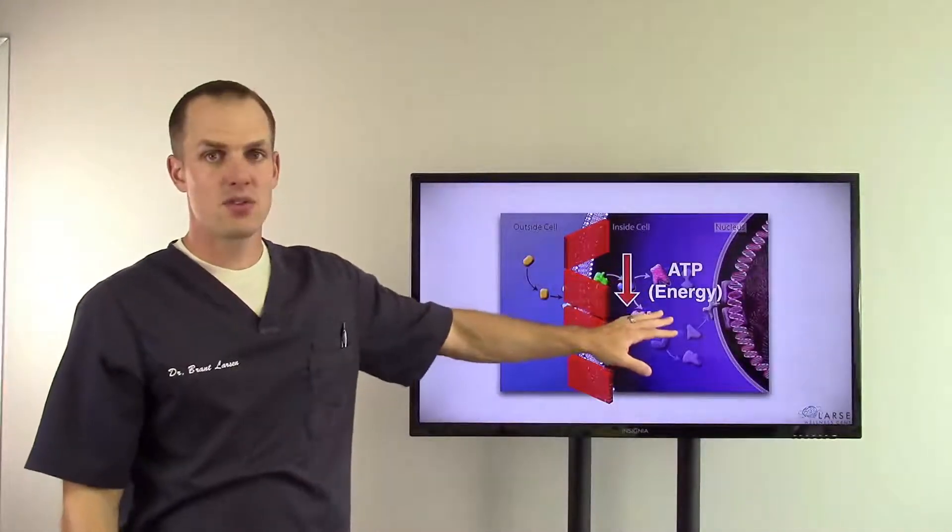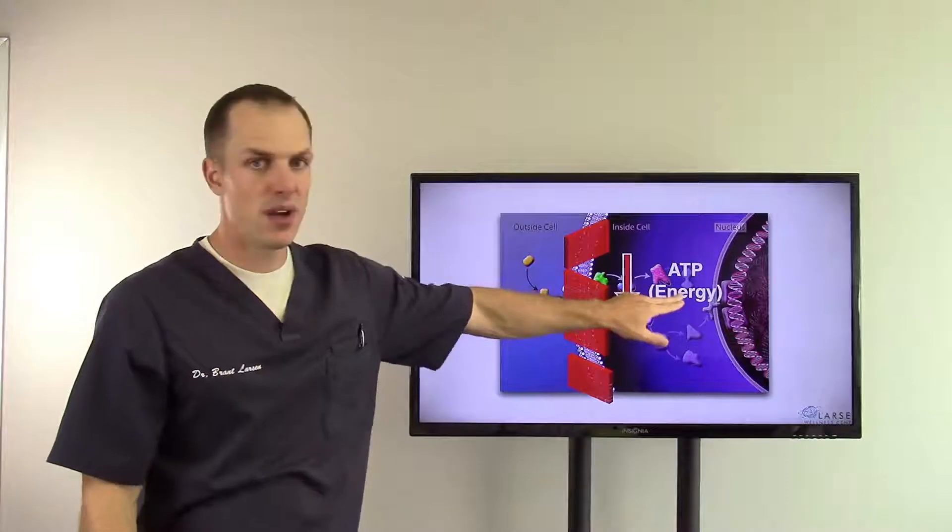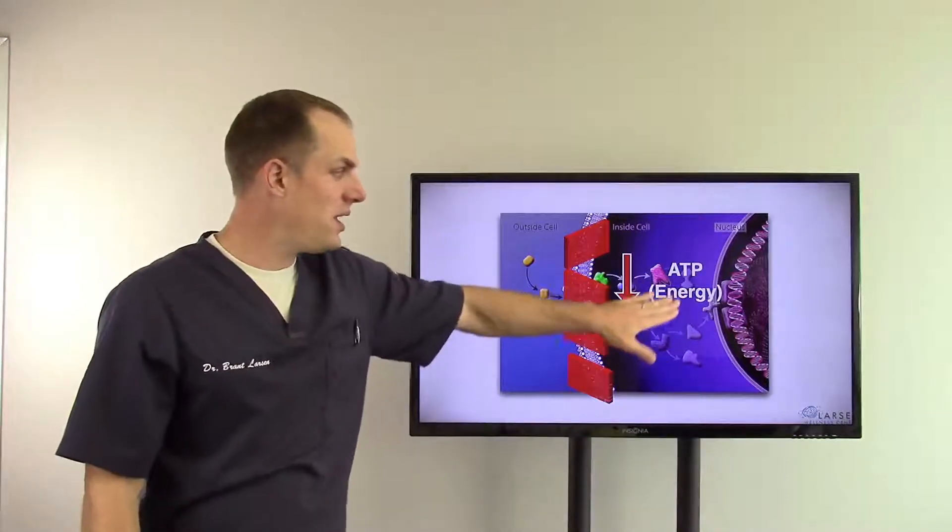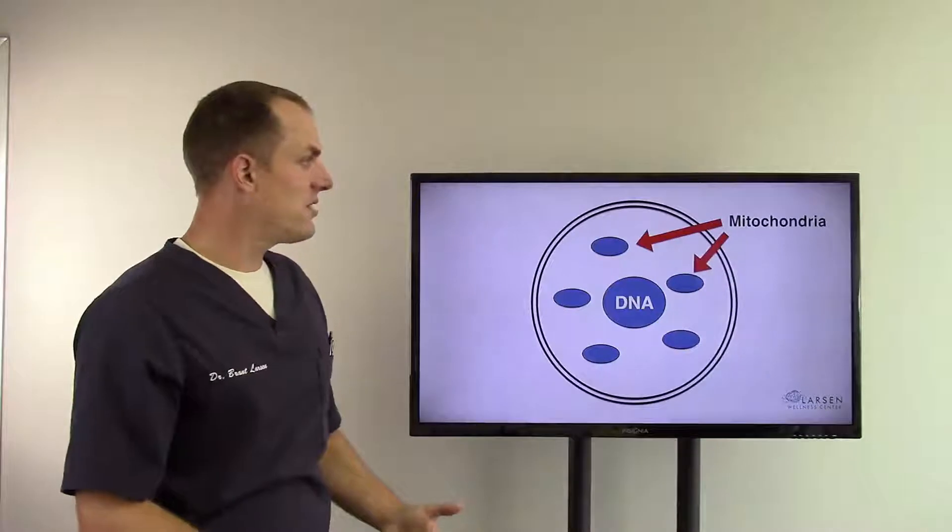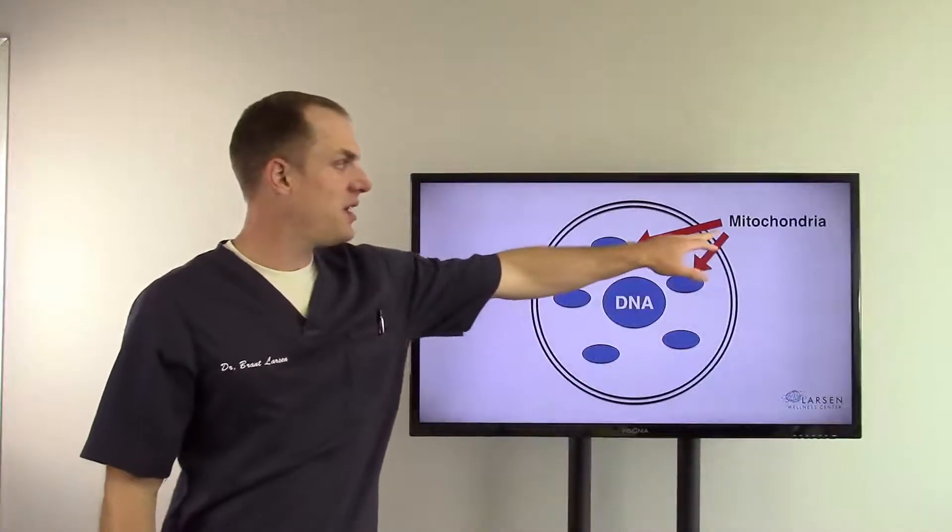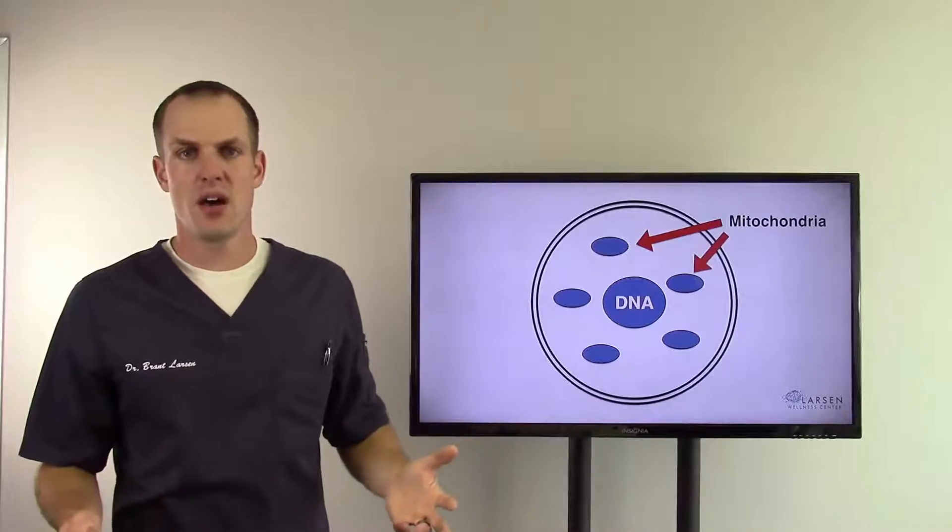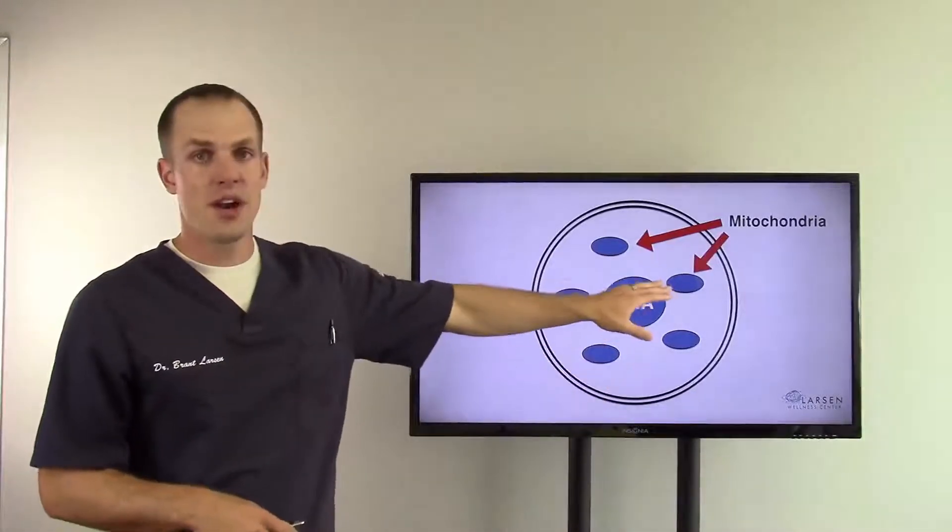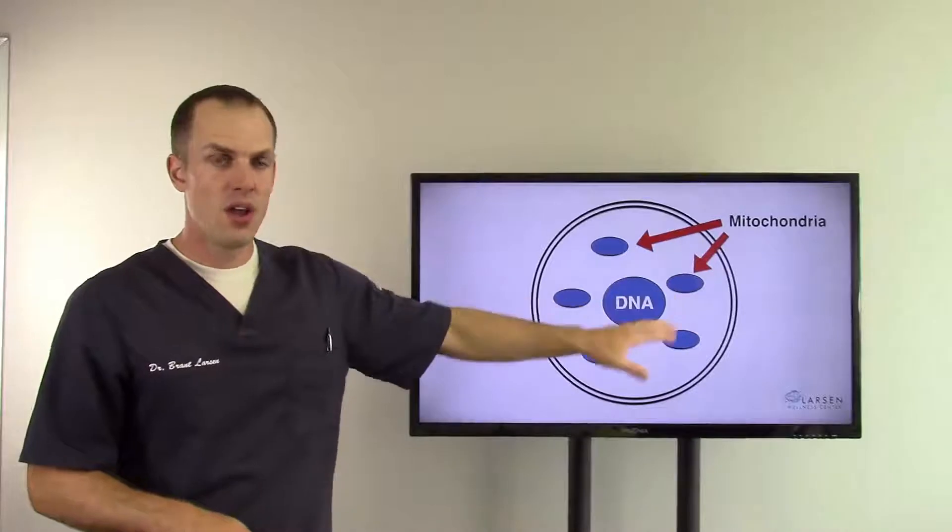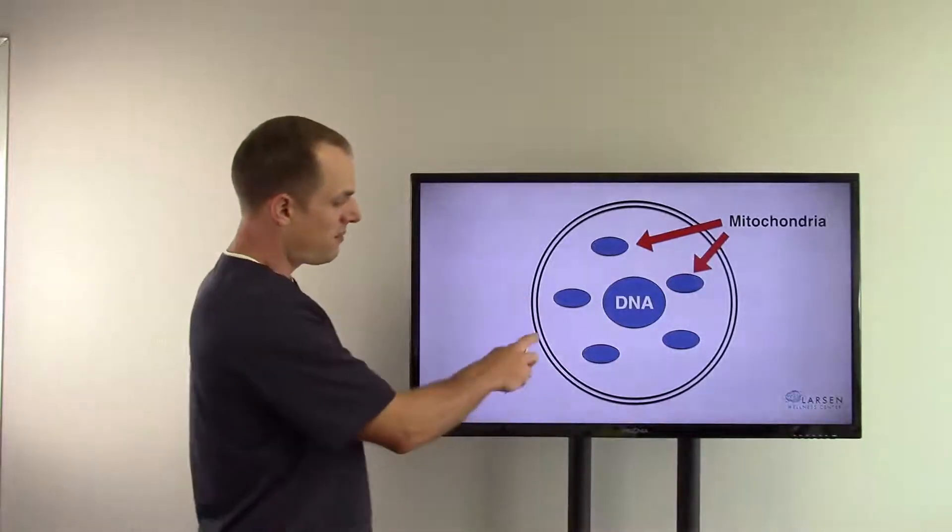Now another thing that happens with this process is energy production goes down in the cell. So we have ATP energy production - it goes down. ATP is made in your mitochondria. You have about 2,500 of these per cell, except for red blood cells, and they're your energy factories - very important.